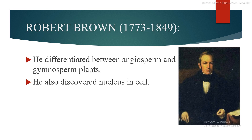Next is Robert Brown, the time period was 1773–1849. He differentiated between the angiosperms, meaning flowering plants, and gymnosperm plants, which are the non-flowering plants. He also discovered the nucleus in the cell.